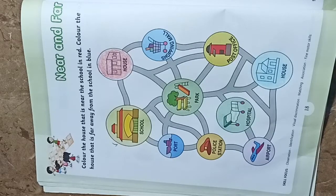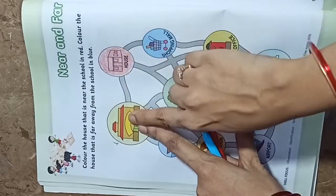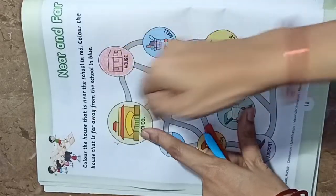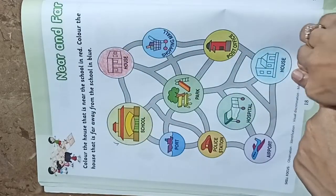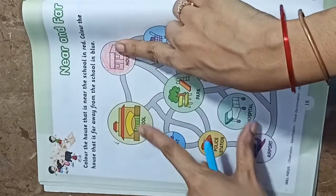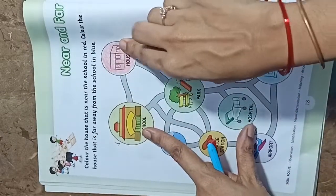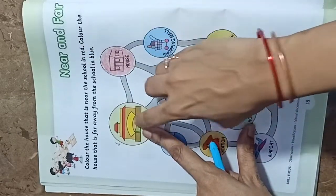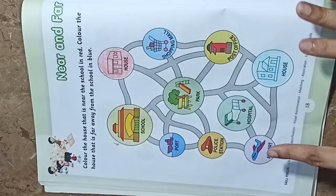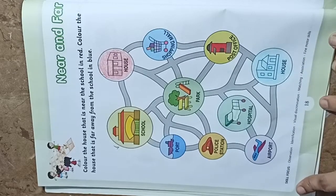So you can understand: the thing that is close to you, what do we say? Near. The thing that is near is near, and the thing that is far is far. Like this, you have to do this exercise on page number 18.